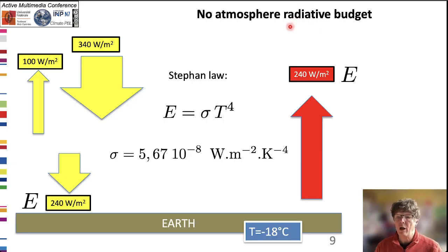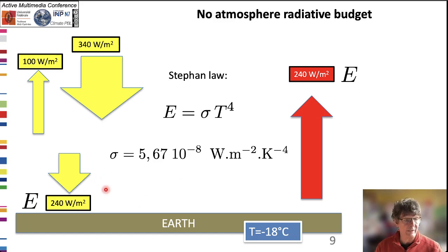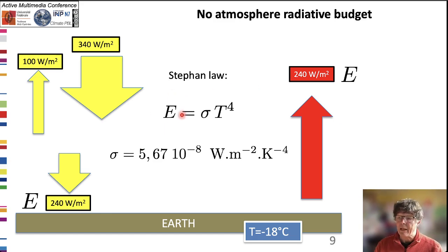The other cards of the mini fresque describe radiative budgets with simple models. In the absence of atmosphere, Earth would emit in the infrared spectrum the same amount of flux as received in the visible spectrum. The Stefan law, relating the black body emitted flux to its temperature, leads to a cool Earth at minus 18 degrees Celsius.